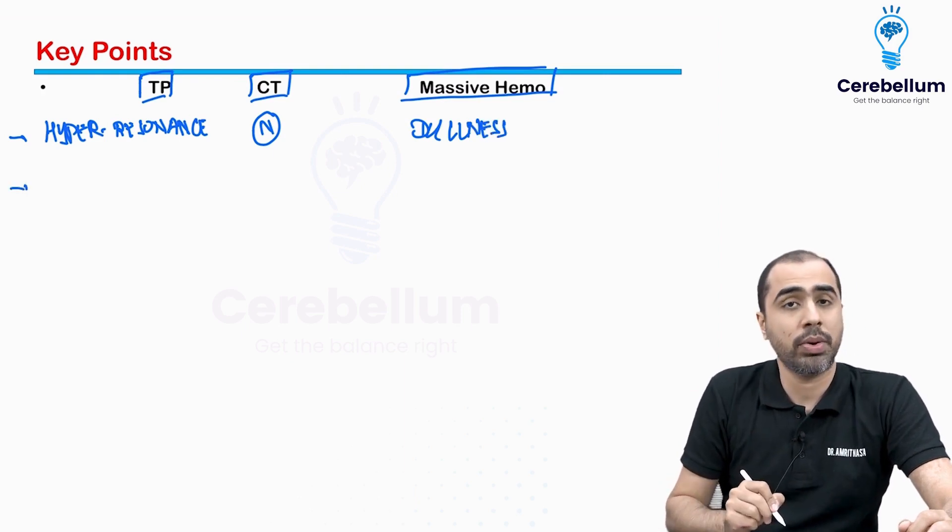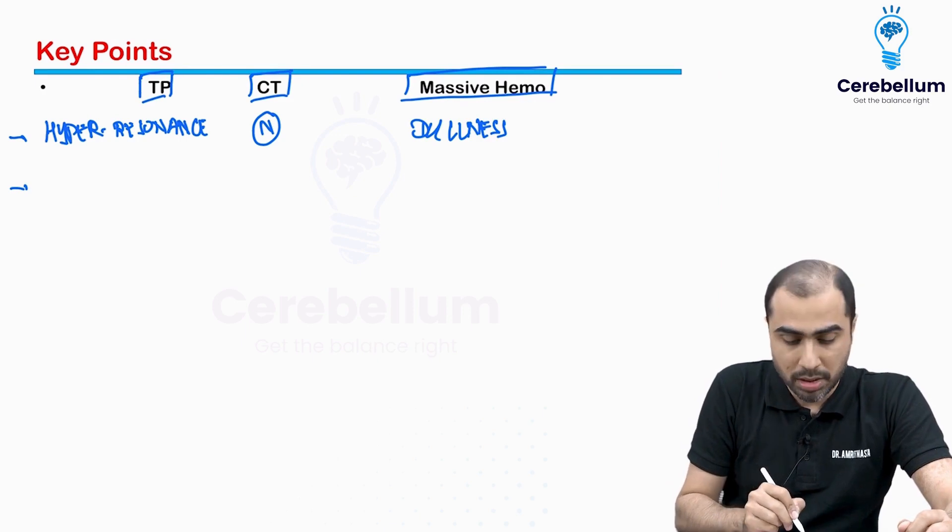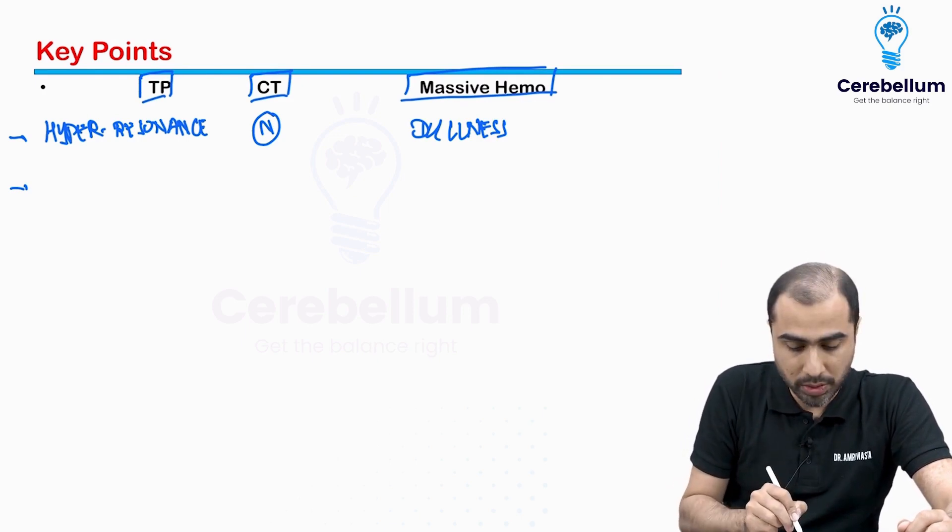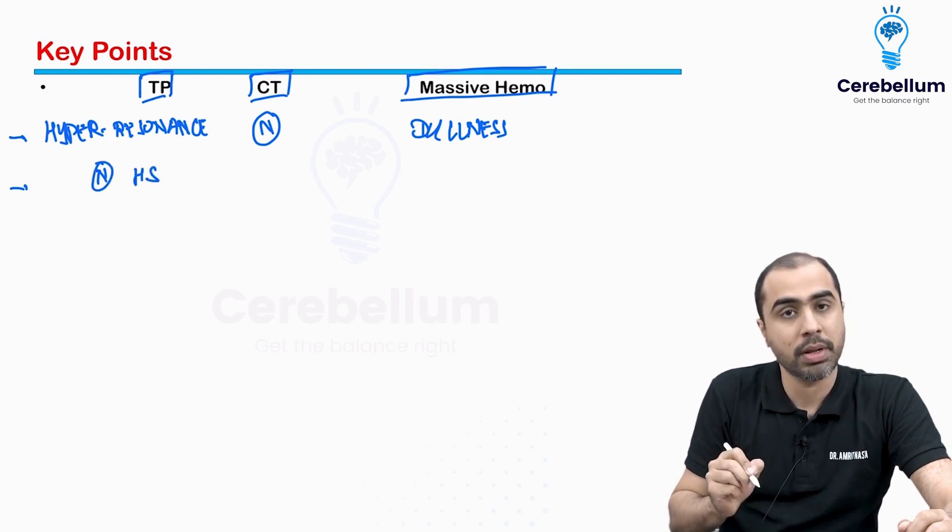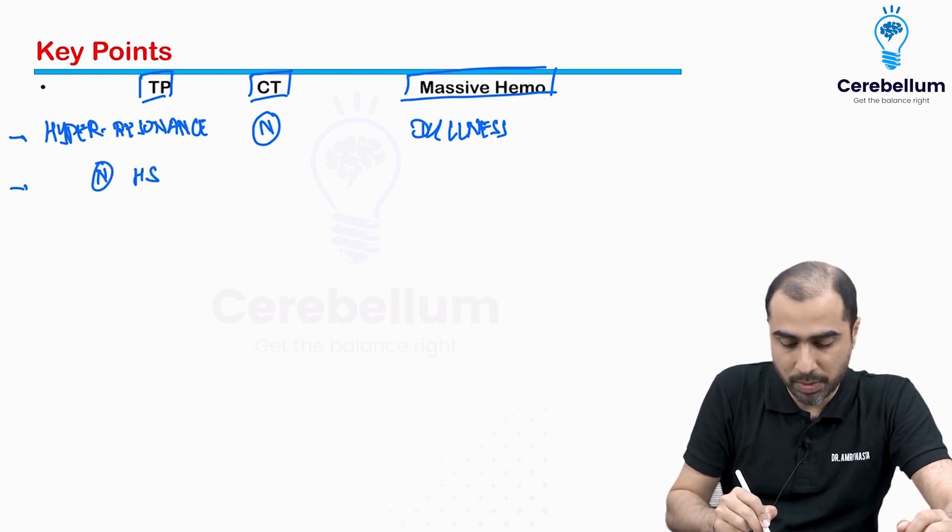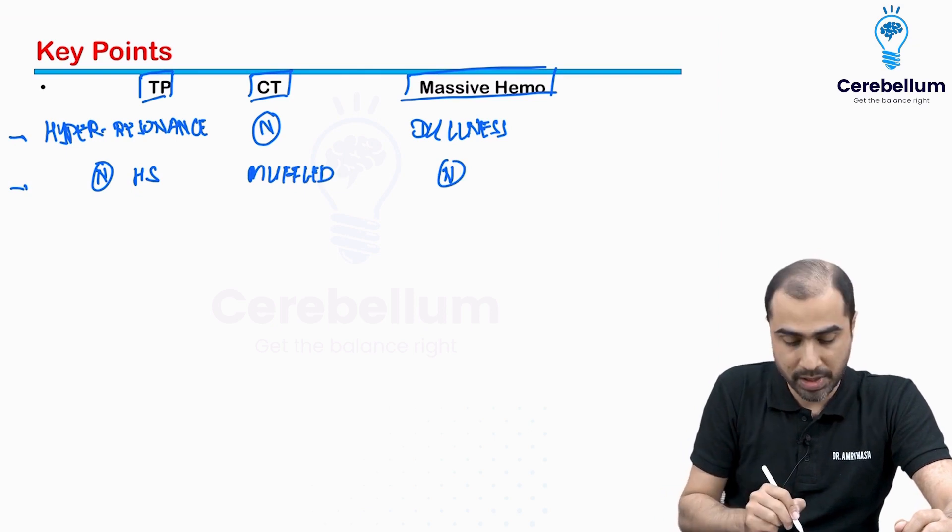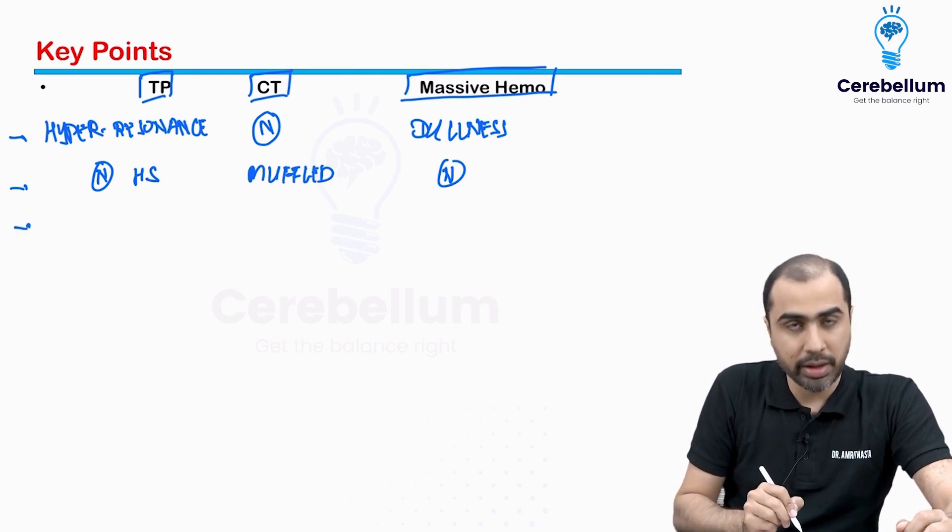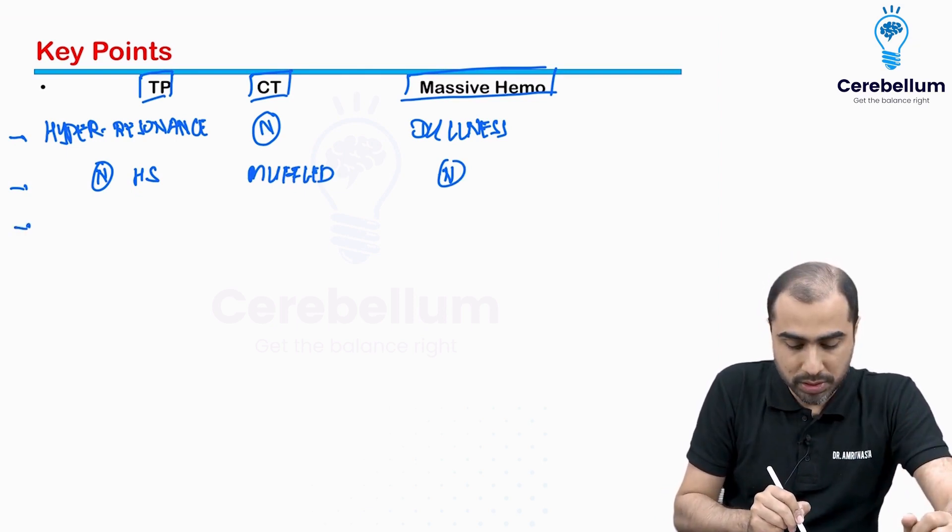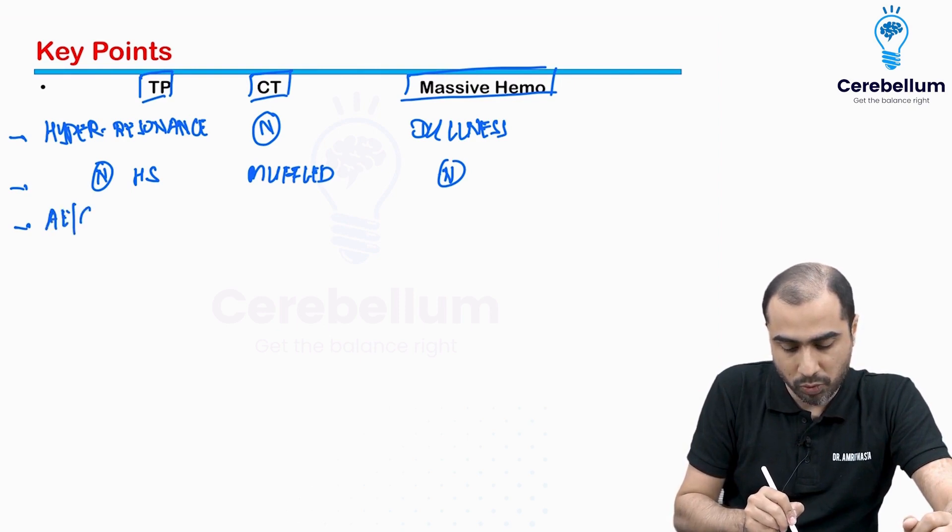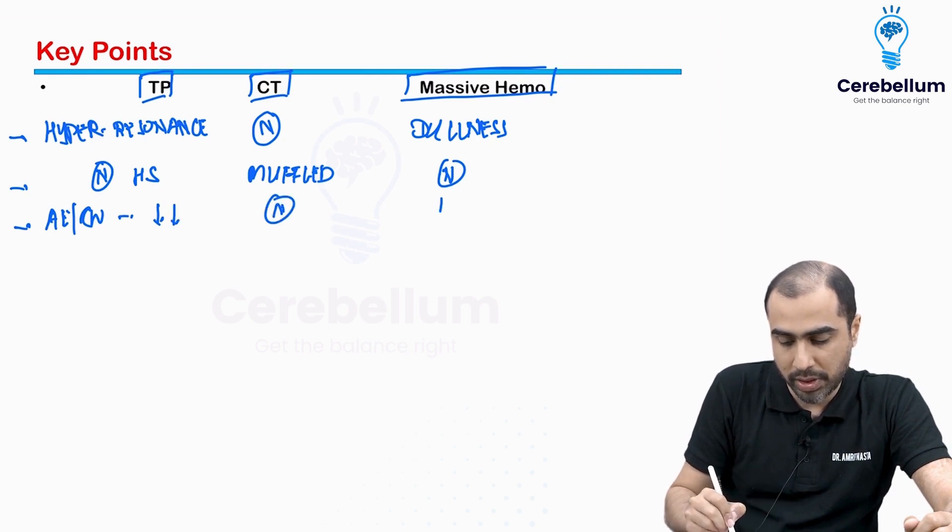So you will get dullness on percussion. The heart sounds are going to be normal. In cardiac tamponade they will be muffled. In massive hemothorax again they will be normal. Air entry or chest wall movements are going to be reduced or absent, they will be normal, they are going to be reduced or absent.